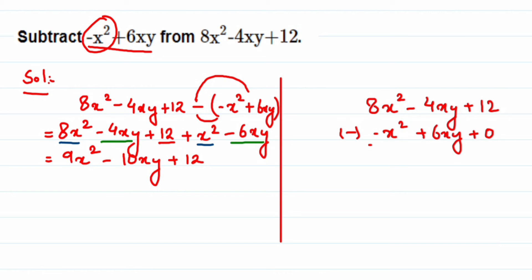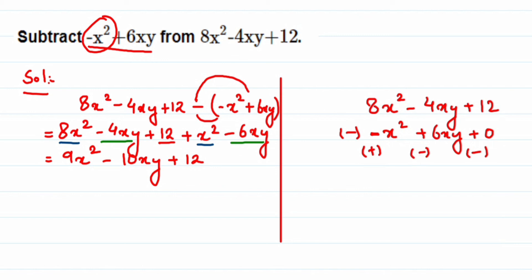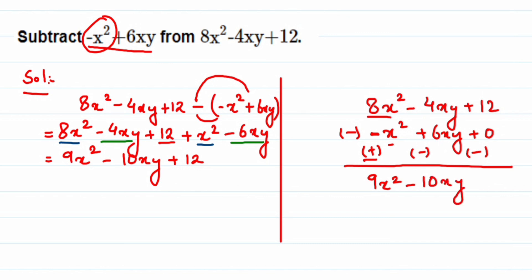When subtracting two expressions in the column method, the signs of the second expression change because you're multiplying by minus. So minus x squared becomes plus, plus 6xy becomes minus, and the 0 becomes negative 0. Now solving: 8x squared plus x squared is 9x squared; minus 4xy minus 6xy is minus 10xy; and 12 minus 0 is 12. So the answer is 9x squared minus 10xy plus 12.